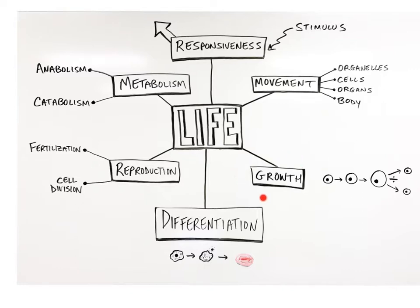The fourth life process is growth, which results from an increase in the body's overall size due to the enlargement of body cells and/or an increase in the number of cells through cell division. Growth can also occur through the accumulation of materials outside of a cell. For example, the mineral-rich matrix that builds up between bone cells allows the bone to grow longer and wider.